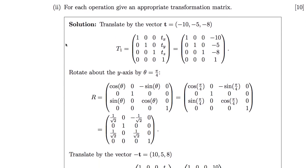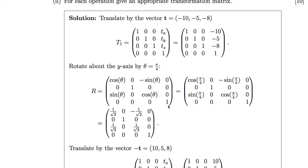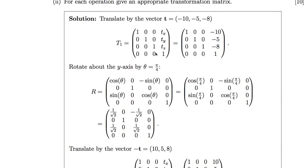For each operation, give the appropriate transformation matrix. The translation matrix is the identity matrix with the fourth column having components (−10, −5, −8). For rotation about the y-axis, the second row and column are unchanged; the x and z components use cosine and sine of the angle: cos θ, −sin θ in the first row, and sin θ, cos θ in the third row. For pi over 4, cosine and sine are both 1/√2, or 0.707. Finally, the reverse translation matrix has the positive values (+10, +5, +8) in the fourth column.